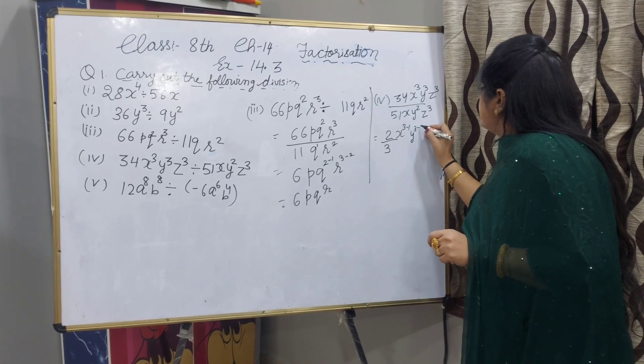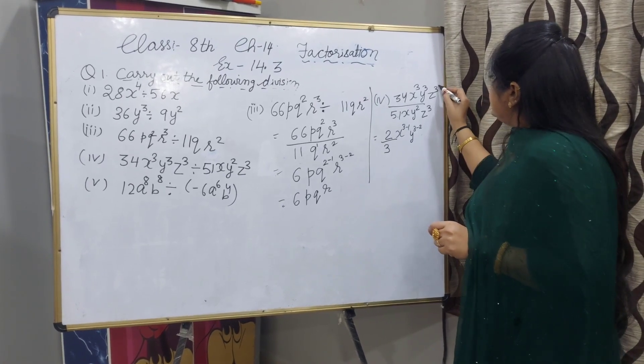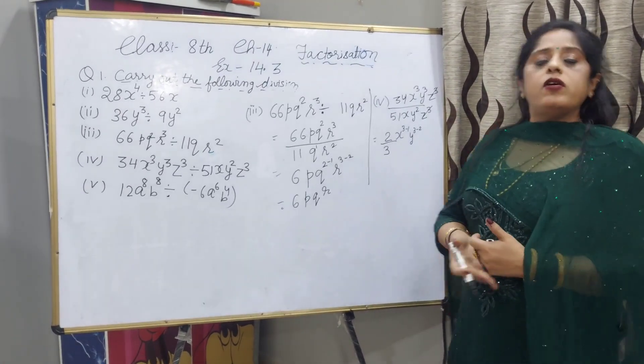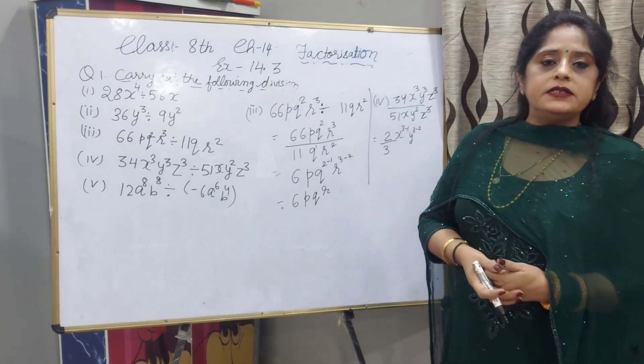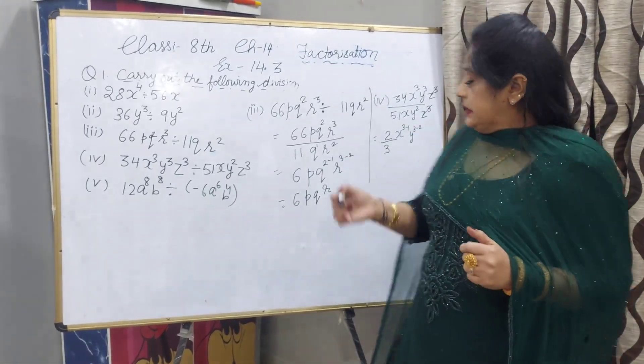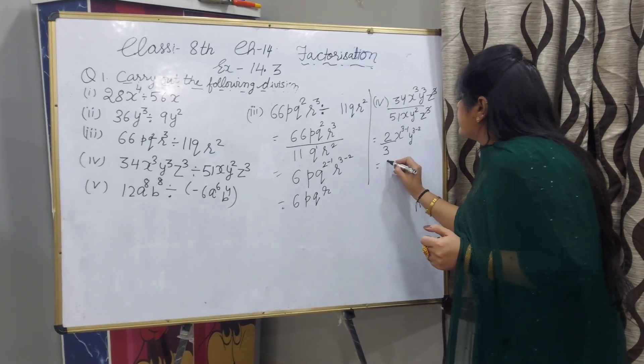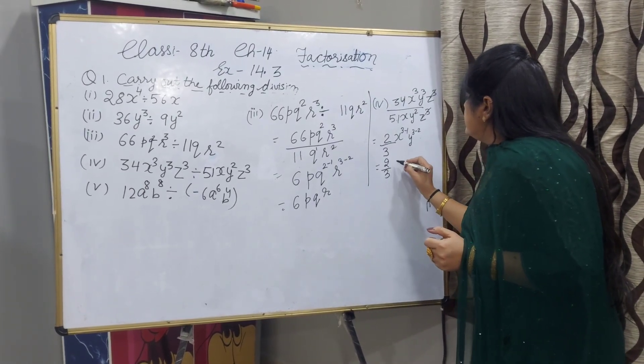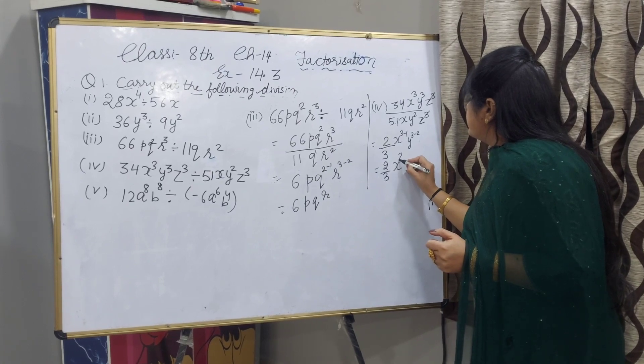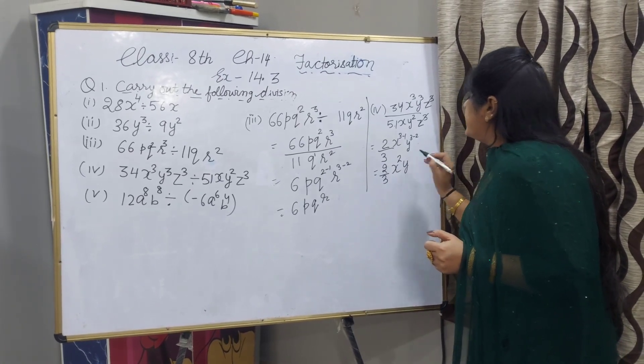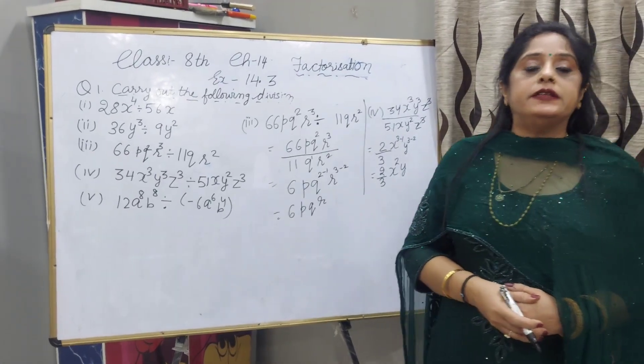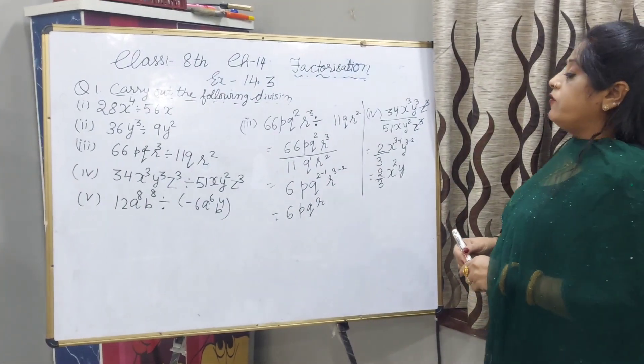y power 3 minus 2, and z 3 and 3 will be cancelled. Either you can write z power 3 minus 3, z power 3 minus 3 will be 0, or you can cut directly. 2 by 3, x power 2, and y. Your answer will be 2 by 3 x^2y.